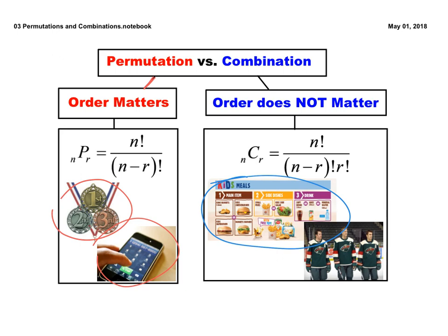When looking at the difference between the formulas, N is the total number it's out of and R is the number being selected. The factorial — the exclamation point — basically means this: if you see 5 factorial, it really means 5 times 4 times 3 times 2 times 1. If you saw 7 factorial, it's going to be 7 times 6 times 5 and all the way down to 1. It's a way for mathematicians to shorten writing out all of those numbers.